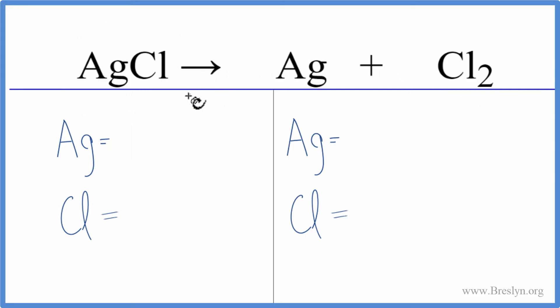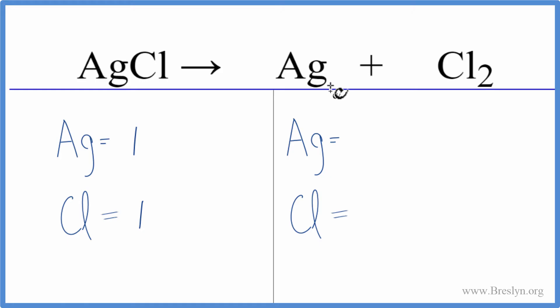So to balance the equation, let's count up the atoms on both sides. We have one silver, we have one chlorine. On the product side, we have our one silver, and we have two chlorines.